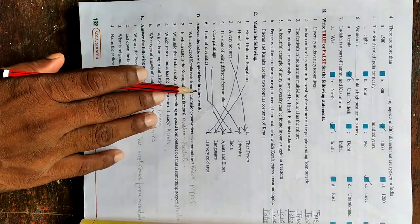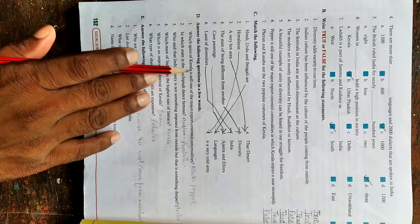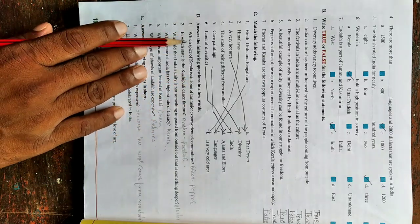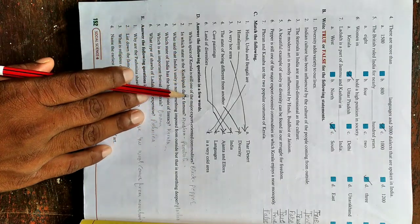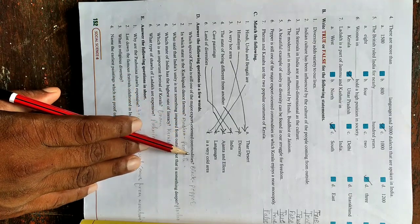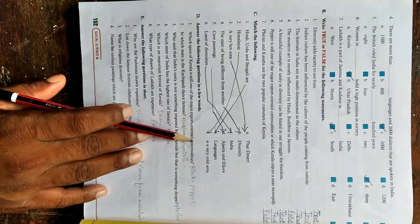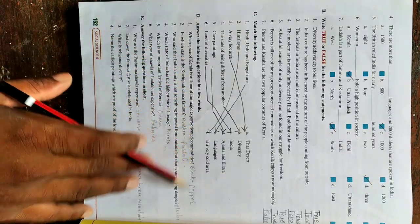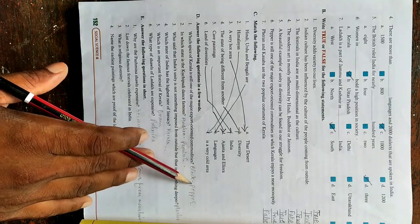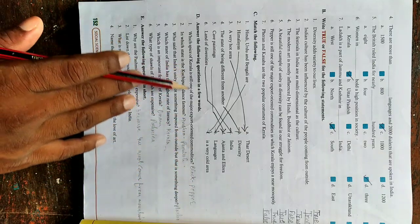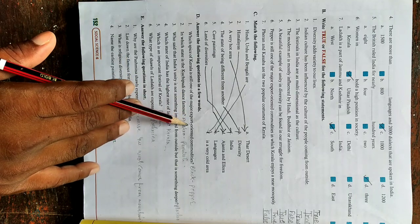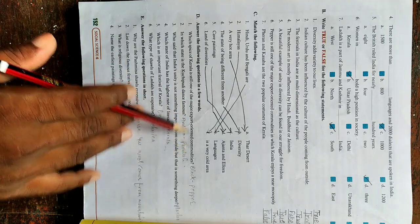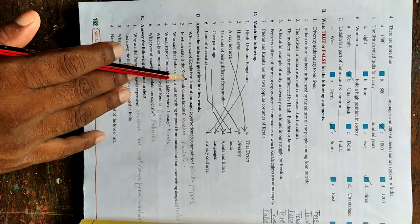First, we will solve few very short answer questions. First question is, which spice of Kerala is still one of the major export-oriented commodities? Pepper is one of the major export-oriented commodities of Kerala.